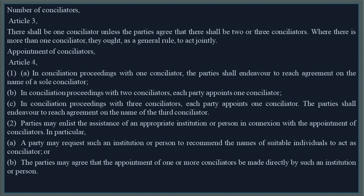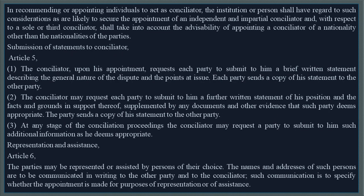Parties may enlist the assistance of an appropriate institution or person in connection with the appointment of conciliators. In particular, a party may request such an institution or person to recommend the names of suitable individuals to act as conciliator, or the parties may agree that the appointment of one or more conciliators be made directly by such an institution or person. In recommending or appointing individuals to act as conciliator, the institution or person shall have regard to such considerations as are likely to secure the appointment of an independent and impartial conciliator and, with respect to a sole or third conciliator, shall take into account the advisability of appointing a conciliator of a nationality other than the nationalities of the parties.